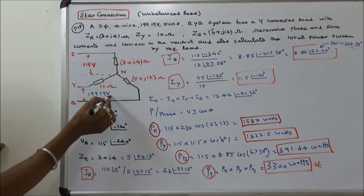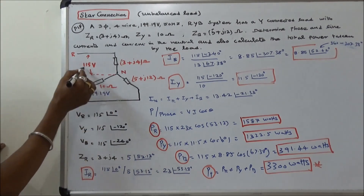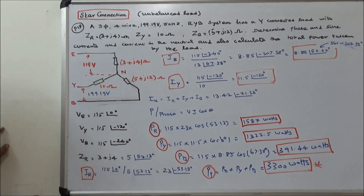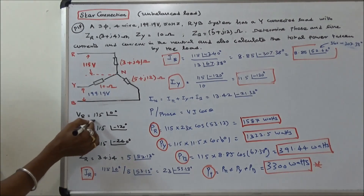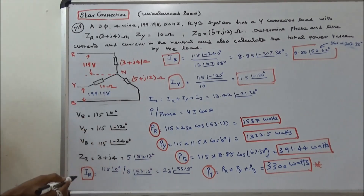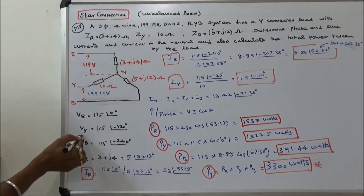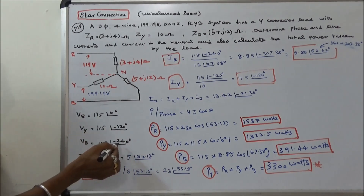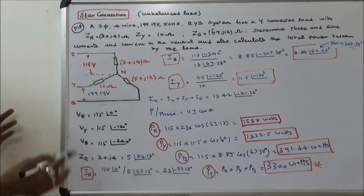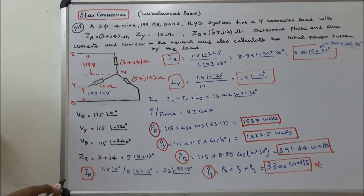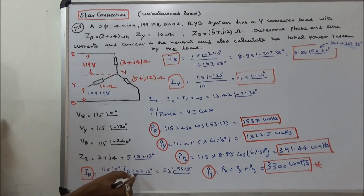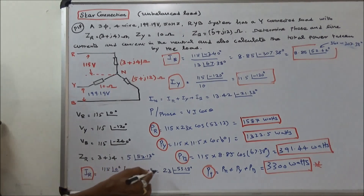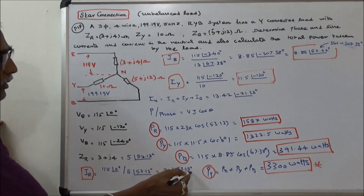The line voltage is given, so the phase voltage is 115 volts. VR equals 115 angle 0 degrees, VY equals 115 angle minus 120 degrees, VB equals 115 angle minus 240 degrees. IR equals 115 angle 0 divided by 5 angle 53.13 degrees, giving IR equal to 23 angle minus 53.13 degrees.